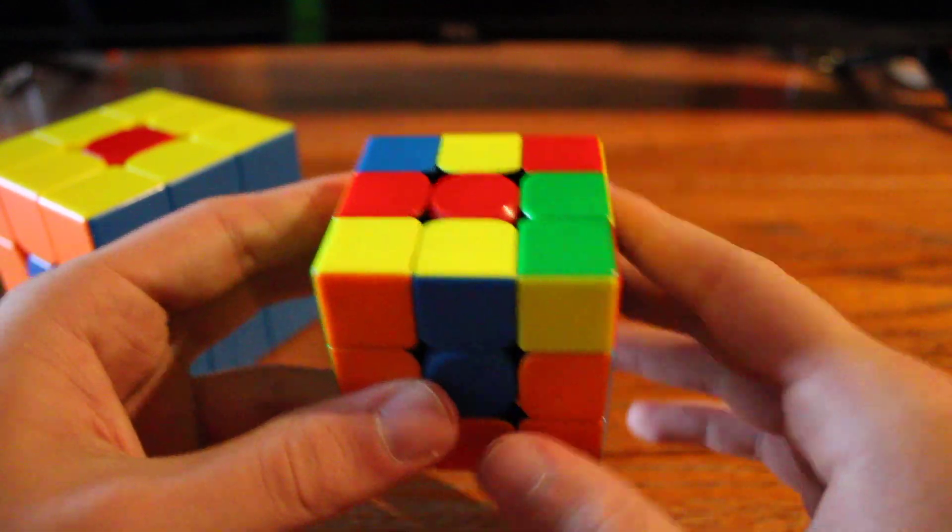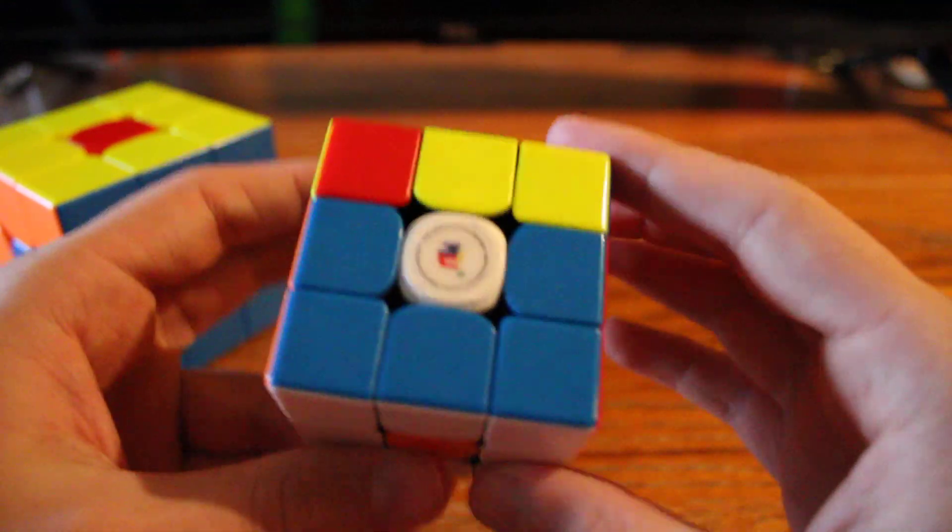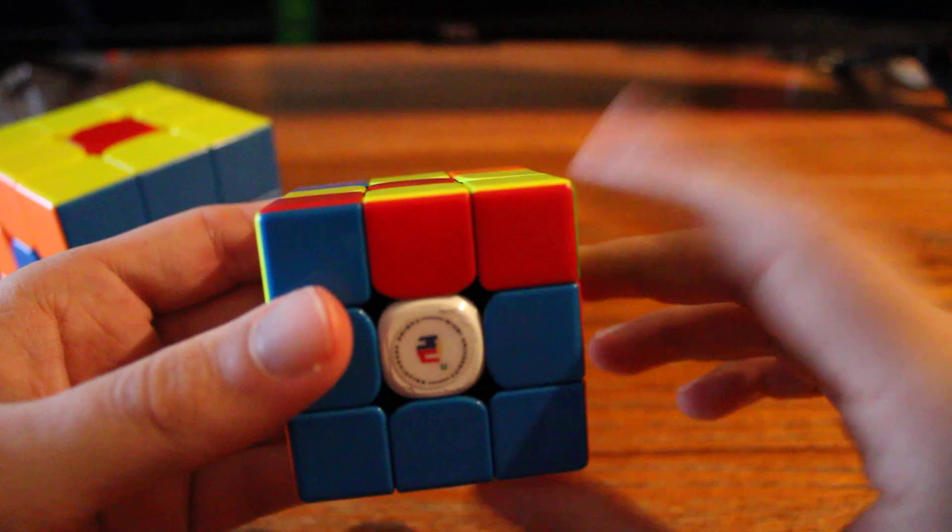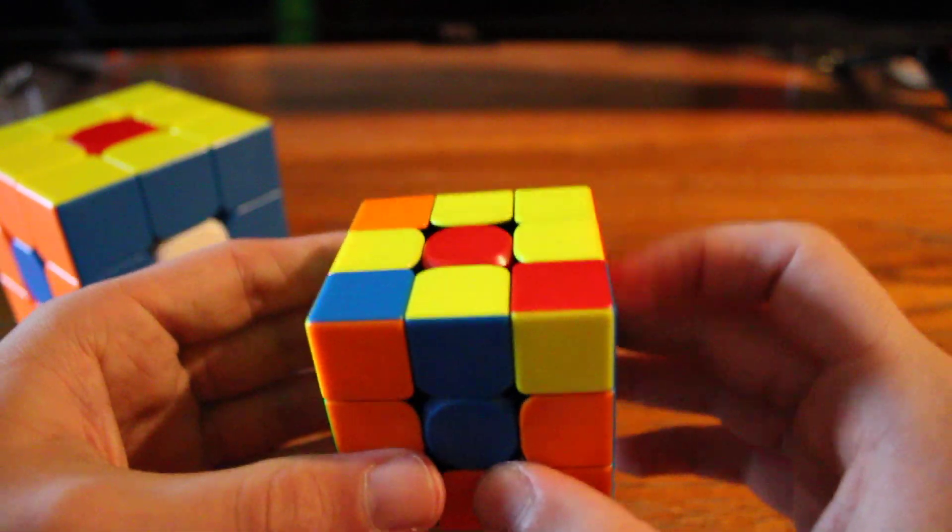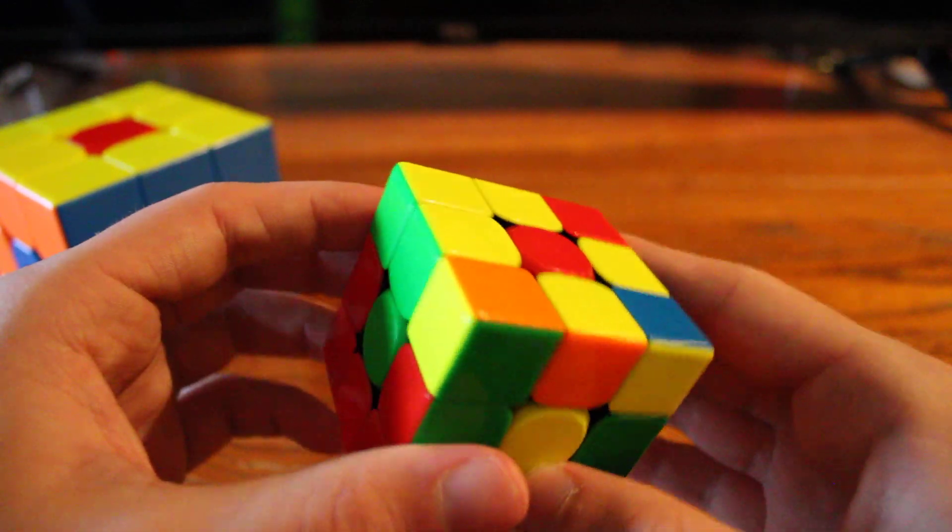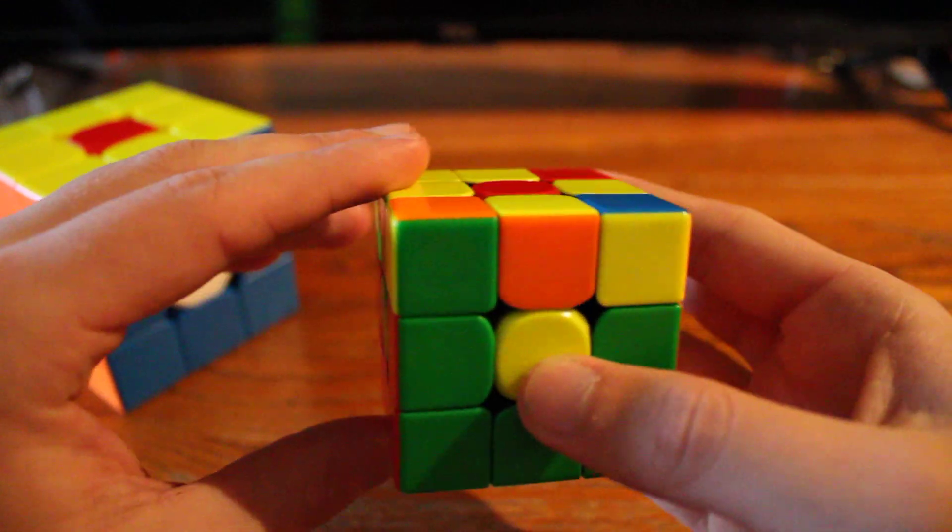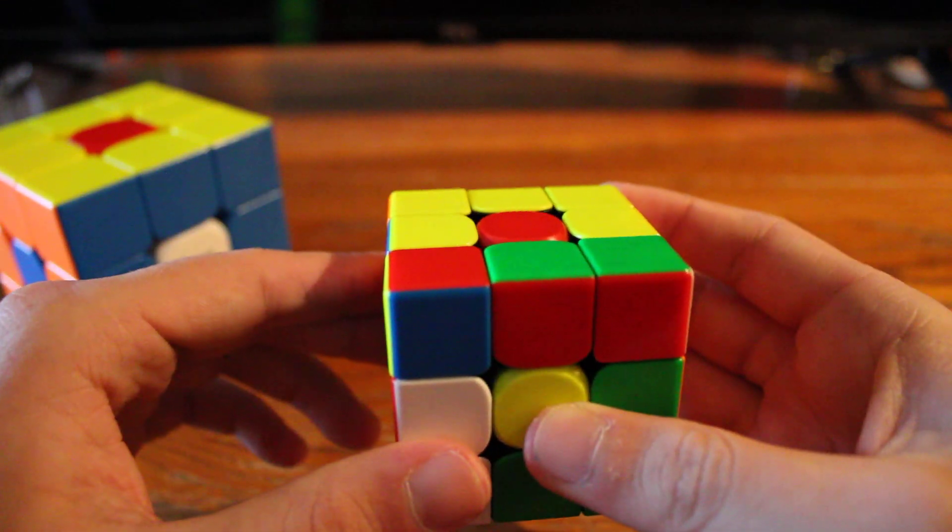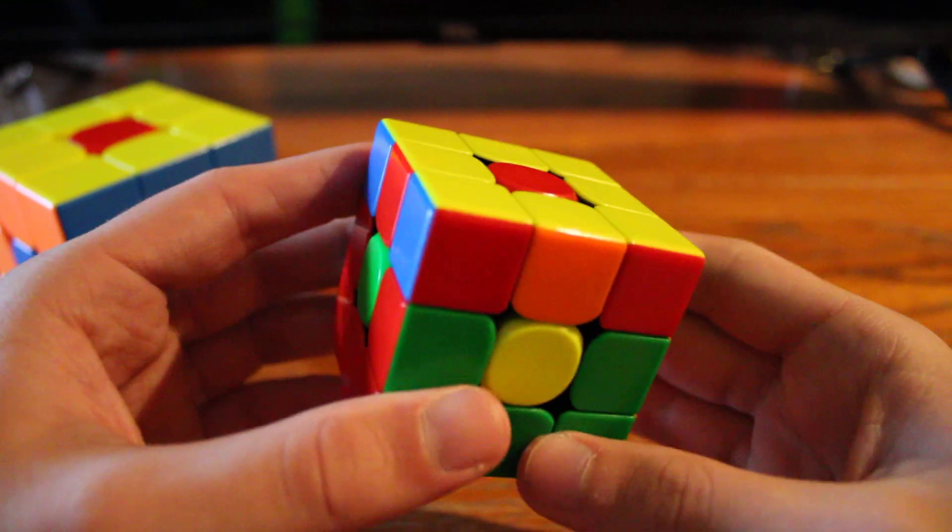For this one, I just happen to go with R, B, U, B', U', R', which is just F-sexy-F' but on the right side instead. I'm going to do an R' and I get a left anti sune. So, it's going to be L'U2LU, L'UL, just like that.